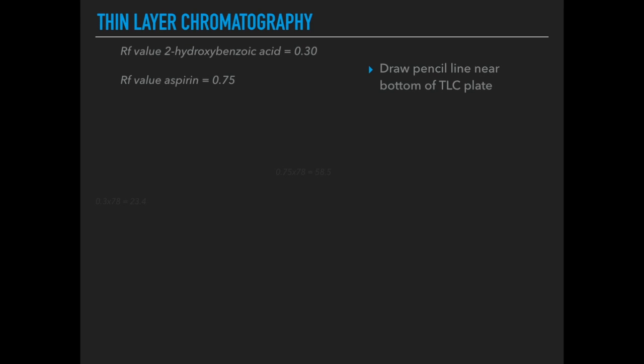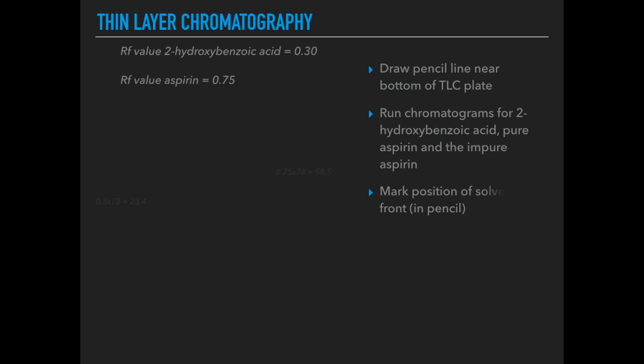The student first draws a pencil line near the bottom of their TLC plate. They then run three chromatograms: one for 2-hydroxybenzoic acid, one for pure aspirin, and a third for the impure aspirin they've made. They mark the position the solvent reaches in pencil — that's called the solvent front. Then they compare the positions, or RF values, of the spots for the impure aspirin with those of the two pure substances.